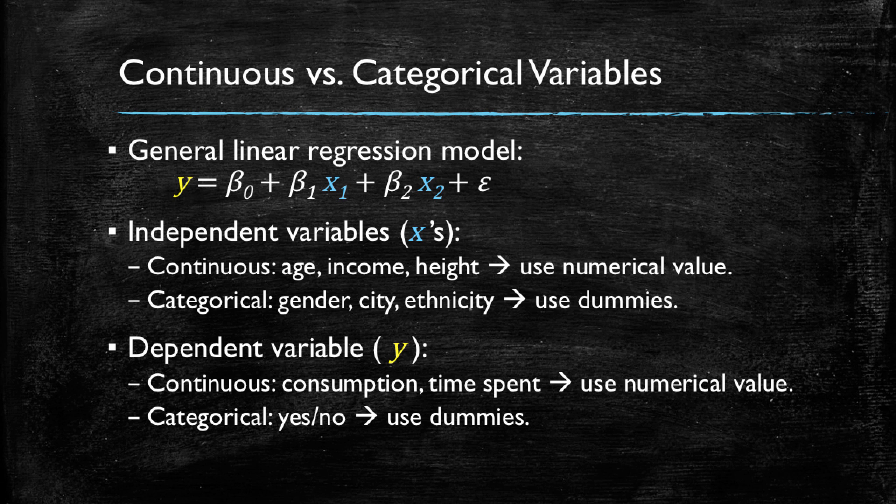However, a more simpler question could be if a customer buys a product or not, which is a categorical variable with two potential outcomes. For these kind of variables, we will be using dummies.